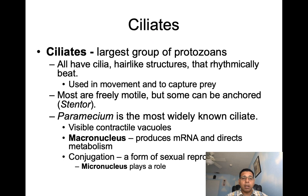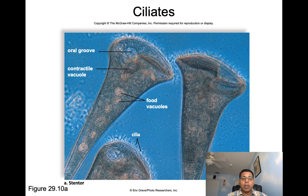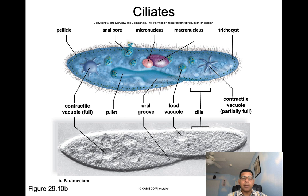Ciliates are the largest group of protozoans. They all have cilia — hair-like structures that rhythmically beat — used in movement and to capture prey. Most ciliates are freely motile but some can be anchored. Paramecium is the most widely known ciliate, with visible contractile vacuoles, a macronucleus that produces mRNA and directs metabolism, and it undergoes conjugation as a form of sexual reproduction.